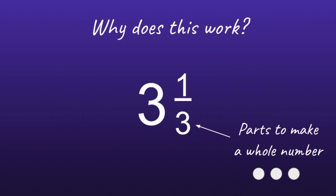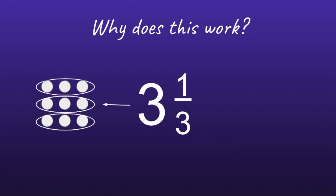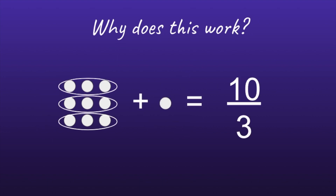So why does this work? The denominator is the parts to make a whole number, so it takes 3 parts to make a whole number. In our whole number, which is 3, that would be 3 separate groups of 3 parts, or 9 parts total. We also have 1 extra part in our numerator. So the 9 parts from the whole number and the 1 part in our numerator would make 10 total parts, and that 10 parts will be over 3, because it takes 3 parts to make a whole number.